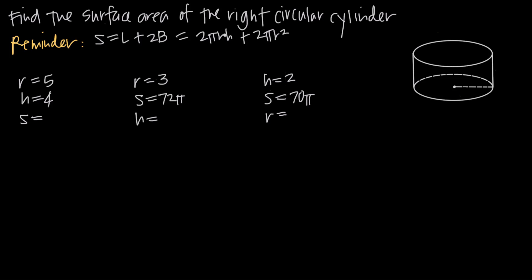The area of the bases can be represented by the area of a circle, where the area of a circle equals πr². So if the area of the top is πr² and the area of the bottom is πr², then the total area of the top and bottom together is 2πr². So we really just have the area of the lateral side plus the area of the bases — that's how the formula breaks down.